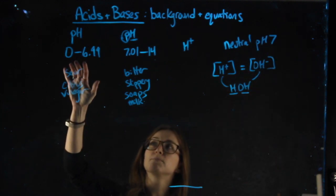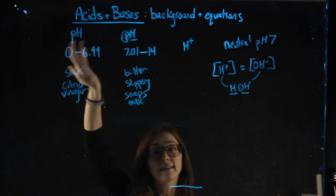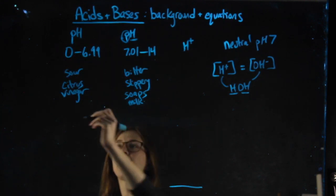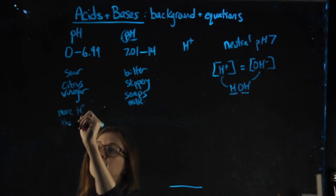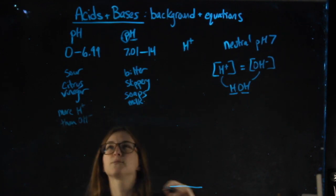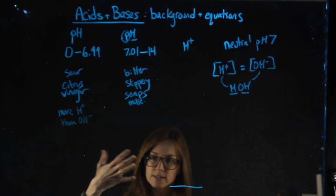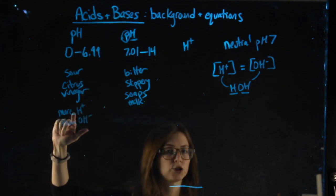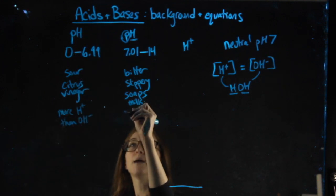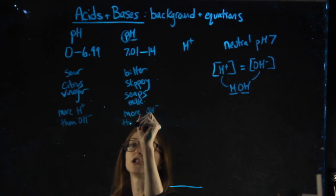We get a smaller number for pH, right, less than 7, if we actually have more H plus than OH minus. And that's because of the math we're going to do to get to pH. It's a log scale, so the numbers feel a little bit backwards. A low pH means we have more H than OH. A high pH means we have more OH than H.